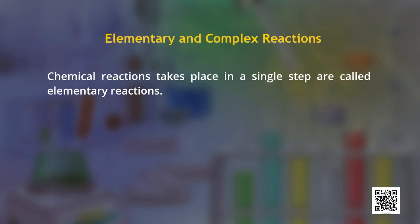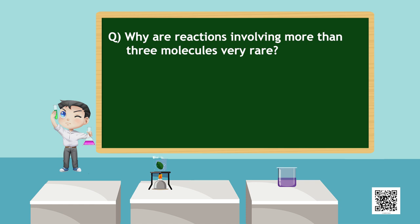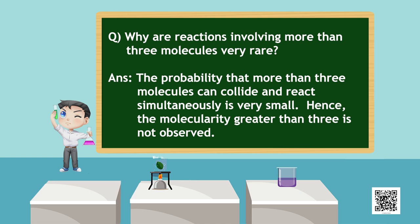A reaction can be unimolecular when one reacting species is involved — for example, decomposition of ammonium nitrite. A bimolecular reaction involves simultaneous collision between two species — for example, dissociation of hydrogen iodide. Trimolecular or termolecular reactions involve simultaneous collision between three reacting species — for example, combustion of nitric oxide. The probability that more than three molecules can collide and react simultaneously is very small. Hence, molecularity greater than three is not observed.